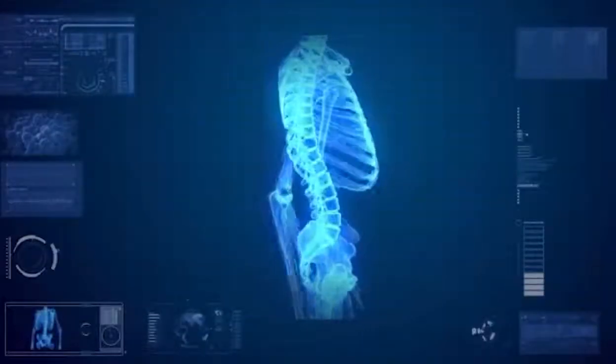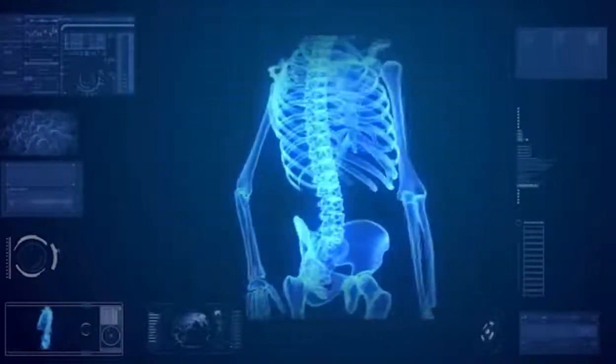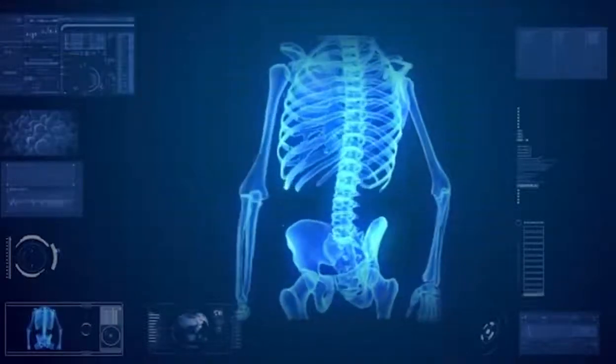The skeletal system. The adult human skeletal system is made up of 206 bones.